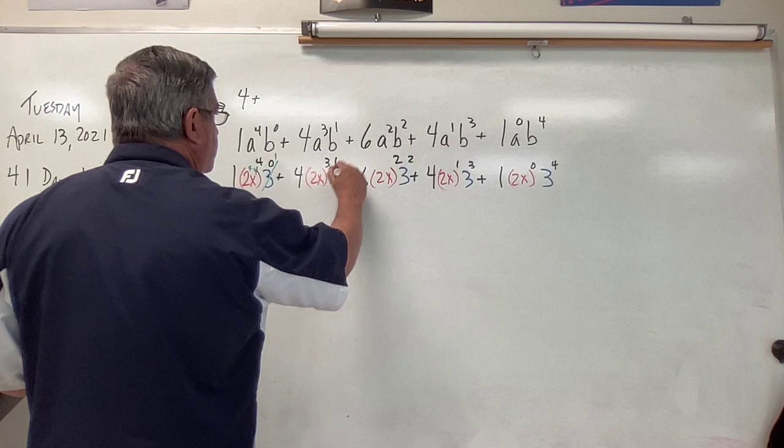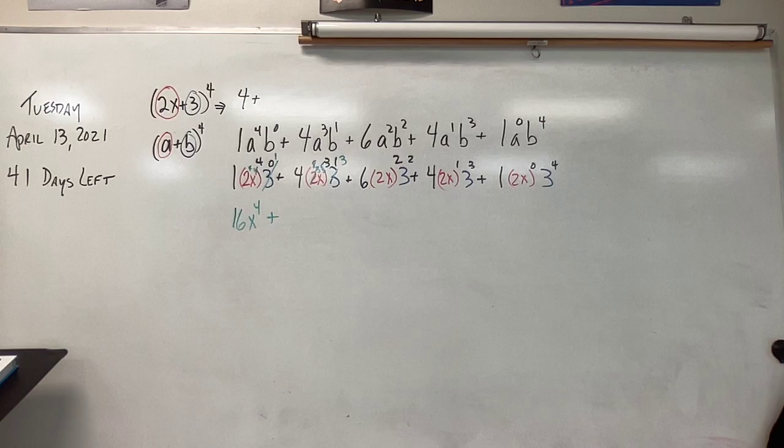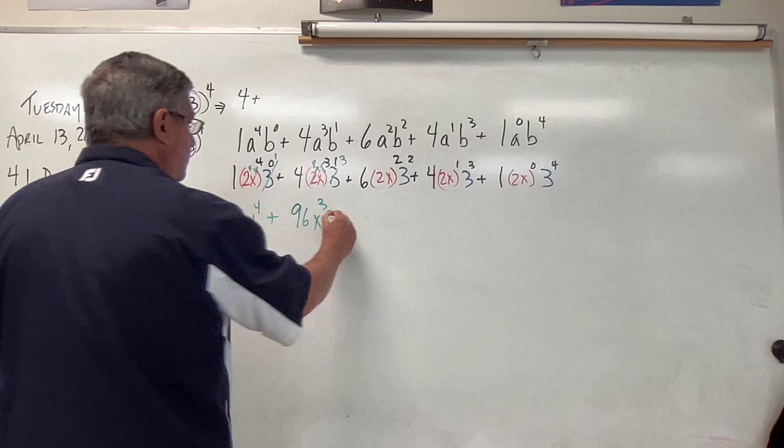Well, this is just, that remains 3. But now this becomes to the third, and this becomes to the third. So this becomes 8. So now I've got 8 times 4, which is 32, and 32 times 3, which is 96x to the third.